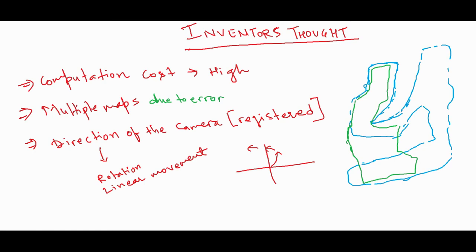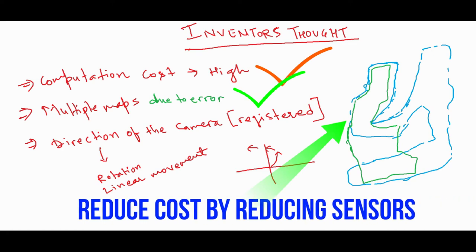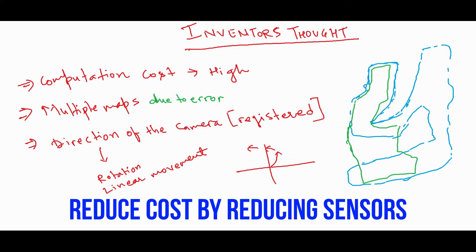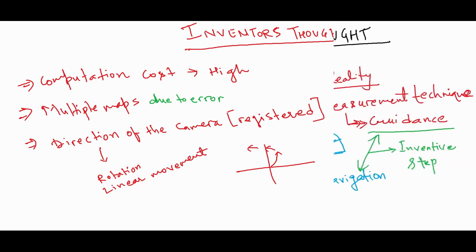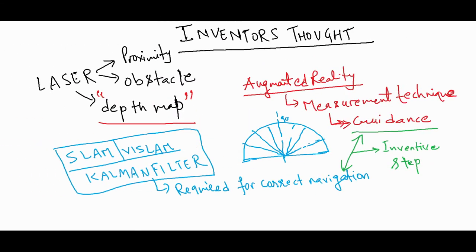It's invention time. There are multiple issues associated with mapping and navigation. Computation cost and mapping error is well known issues. We can come up with idea to reduce use of sensors. Measurement technique used in augmented reality could be one solution. Inventive steps can be discovered in navigation based on measurement.